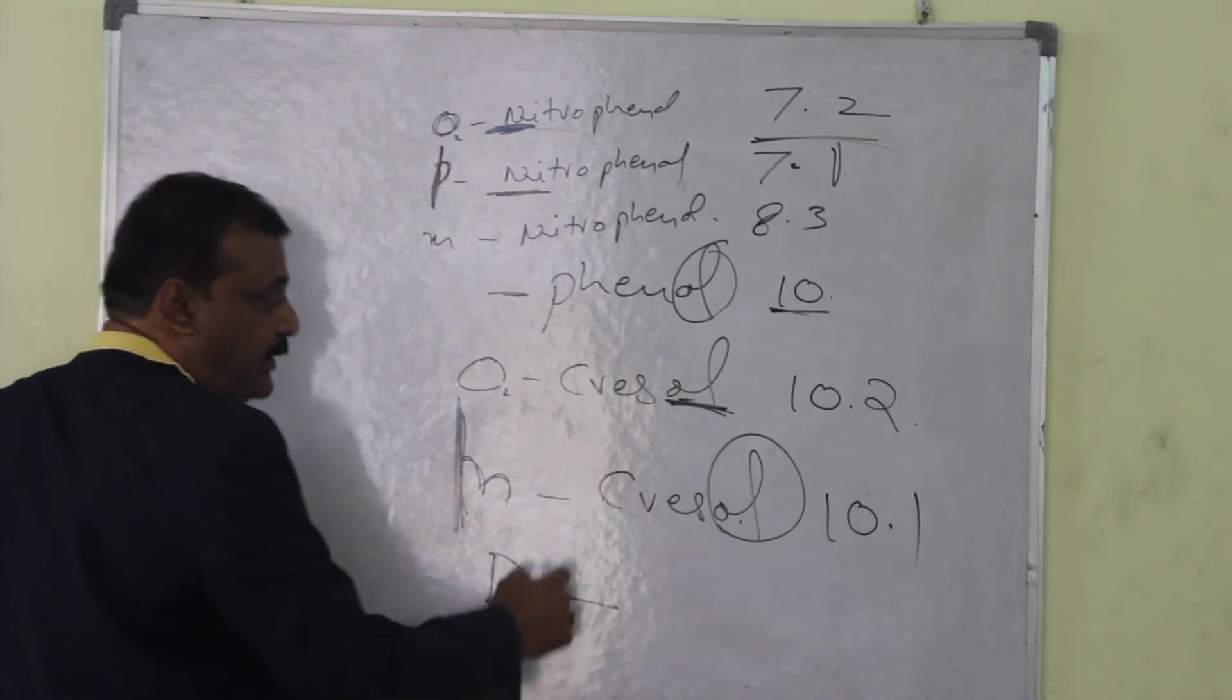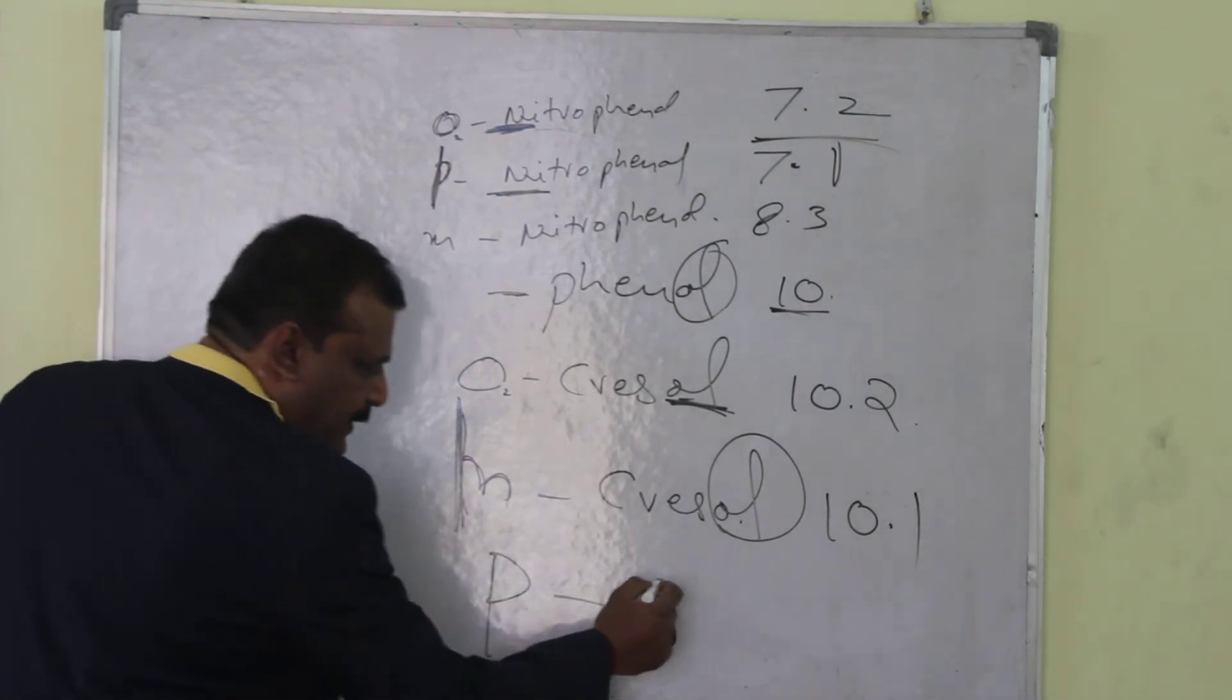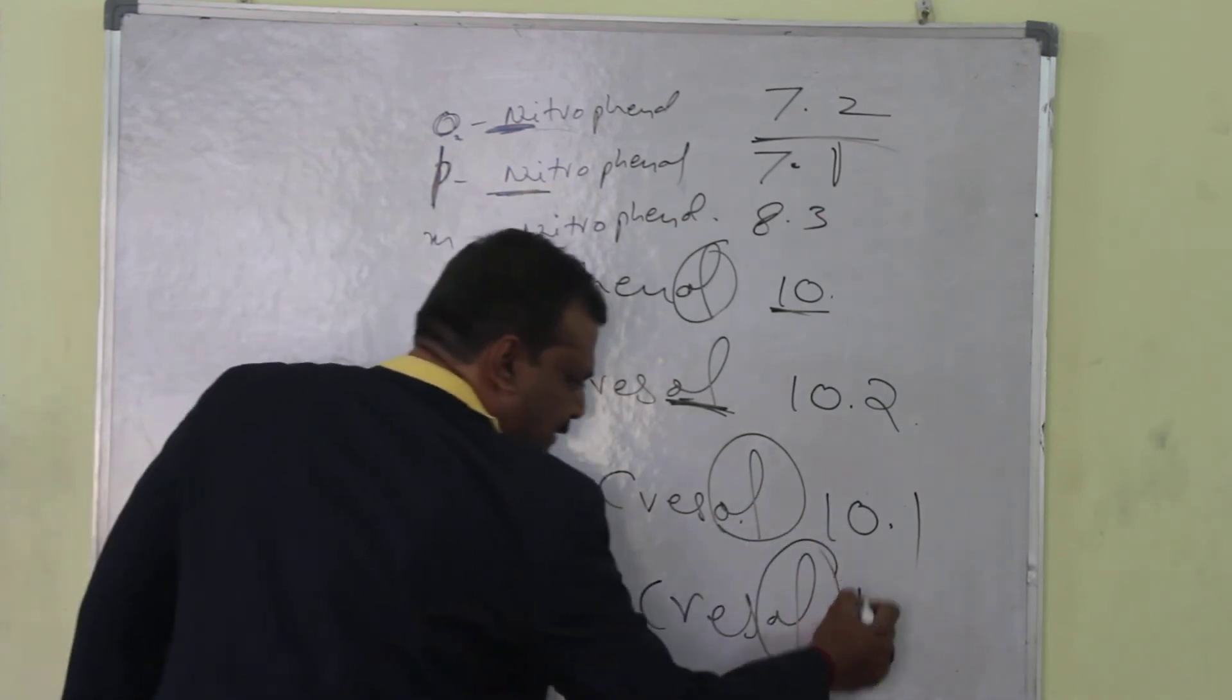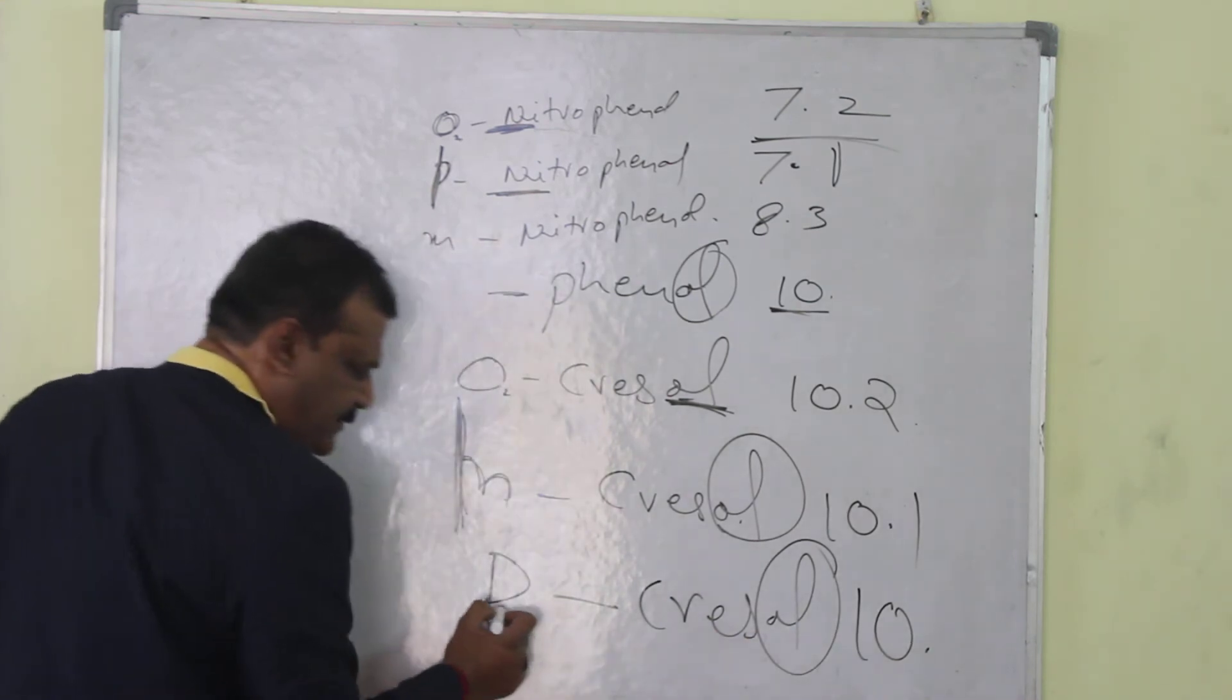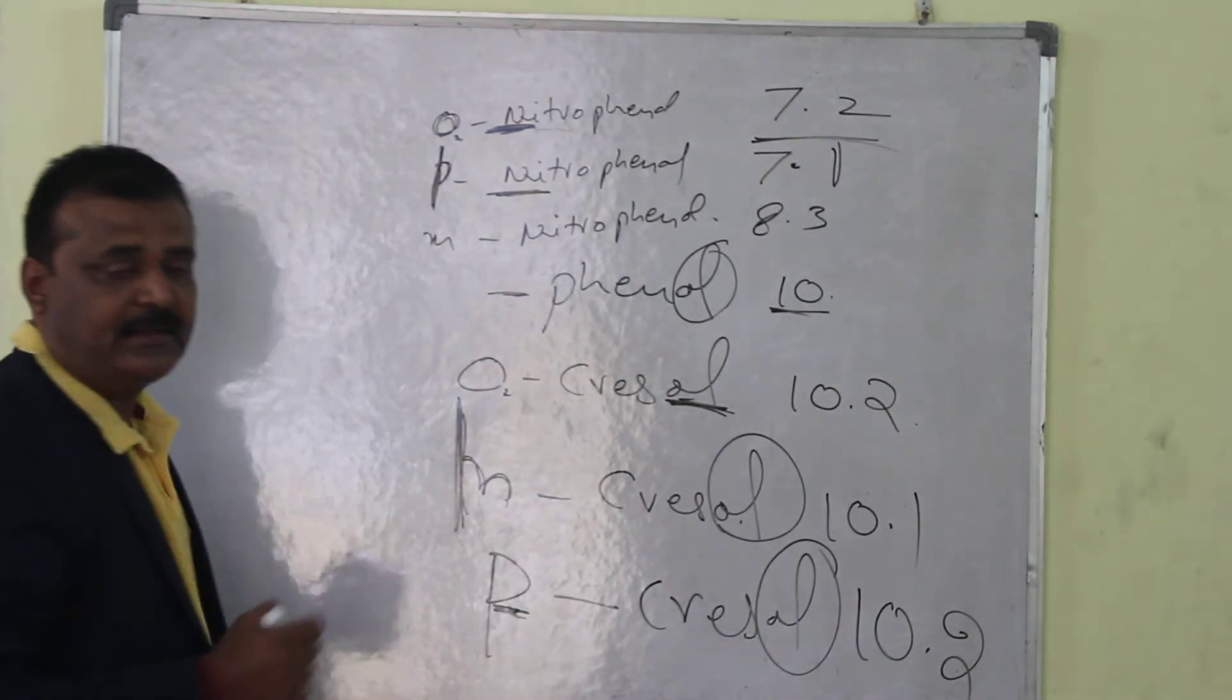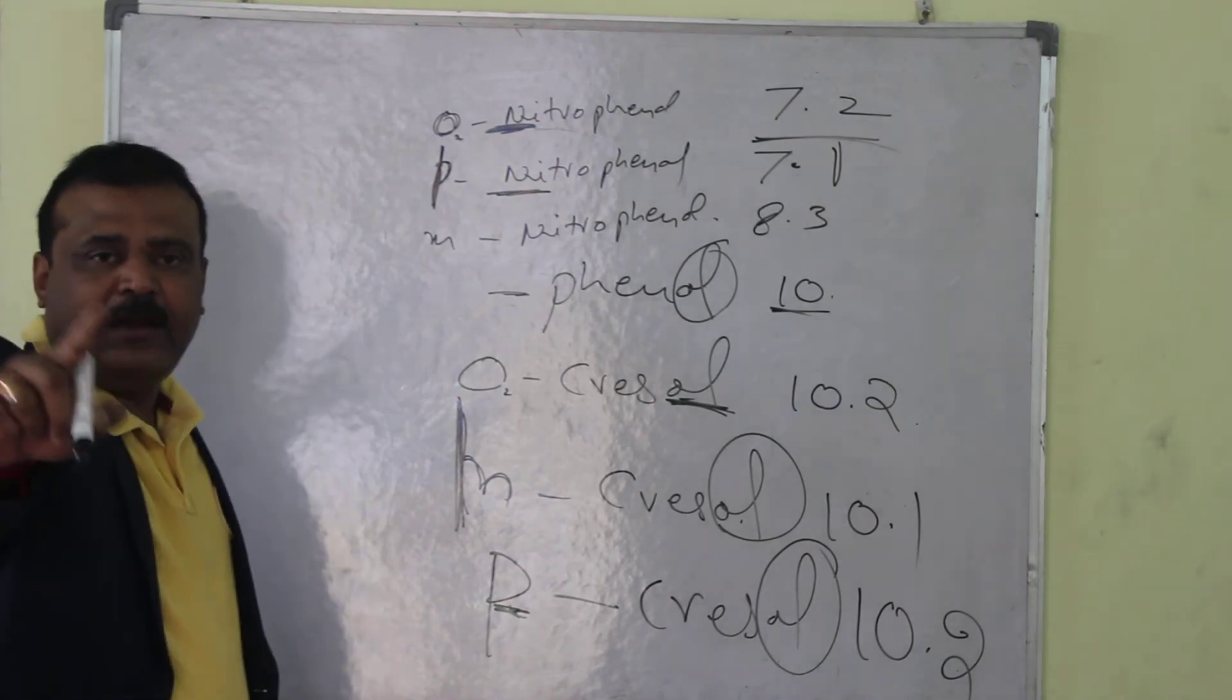And last one, para nitrophenol, sorry, para cresol, that is S. Again cresol, that is 10. Again para, that is 2, oxygen para, 10.2.